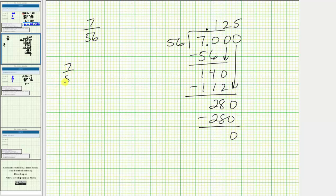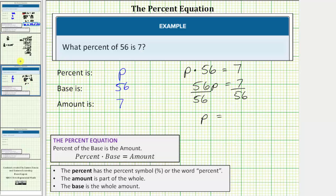We now know that 7/56 is equal to 0.125. So going back to the previous slide, we can say p is equal to 7/56, which equals 0.125. Now we must convert the decimal to a percentage.